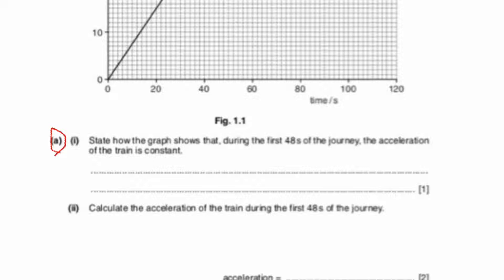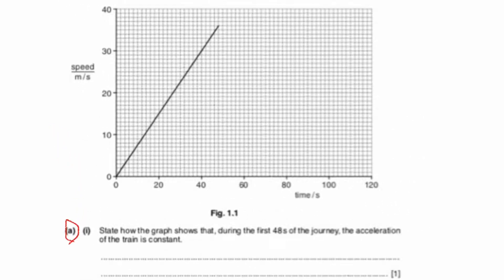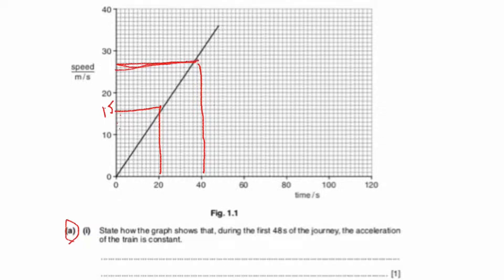Looking at the graph, at 20 seconds it meets the y-axis at 15 meters per second. For 40 seconds it is coming to 25, and for 45 seconds it is also reading consistently. The speed increment at each interval is 15 meters per second — here 15, here 15, here 15 — so the increment is constant everywhere.